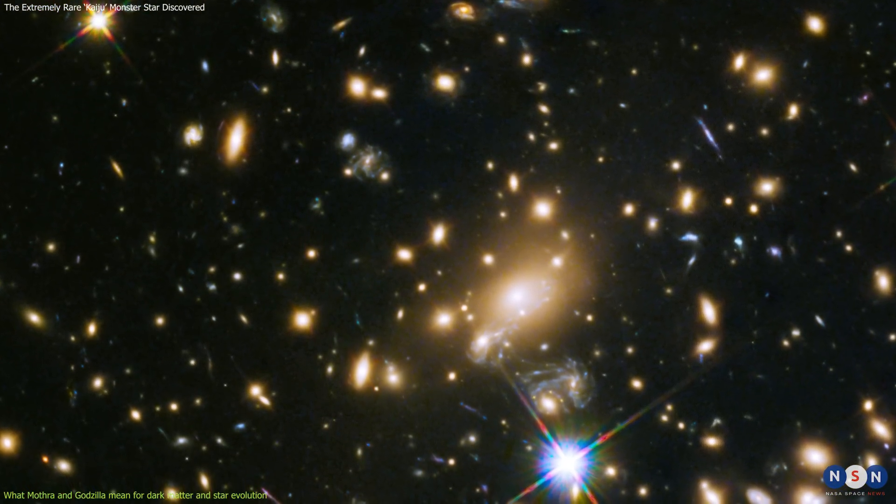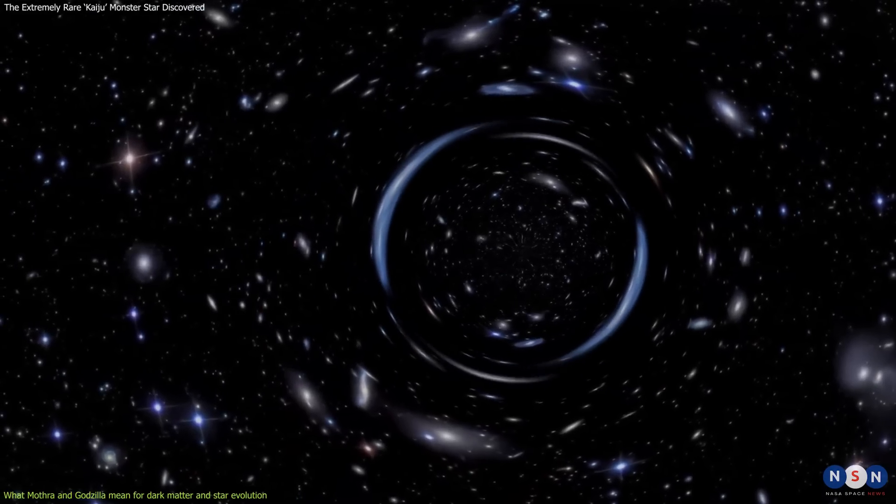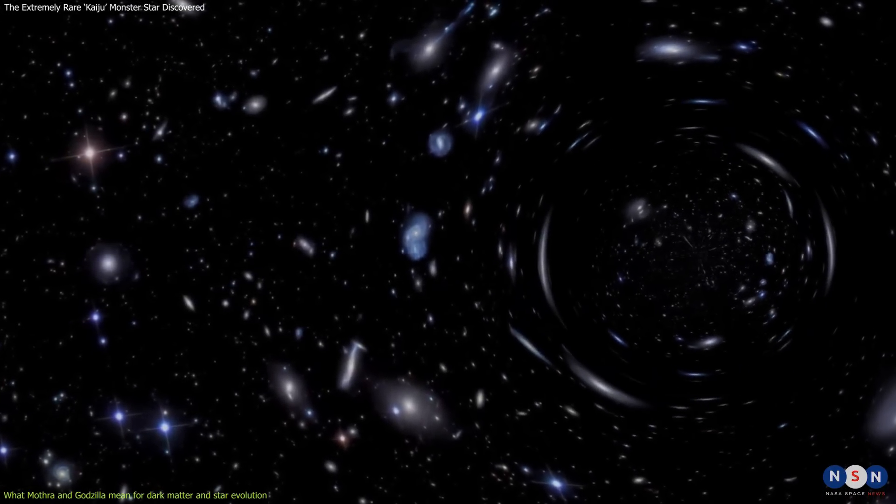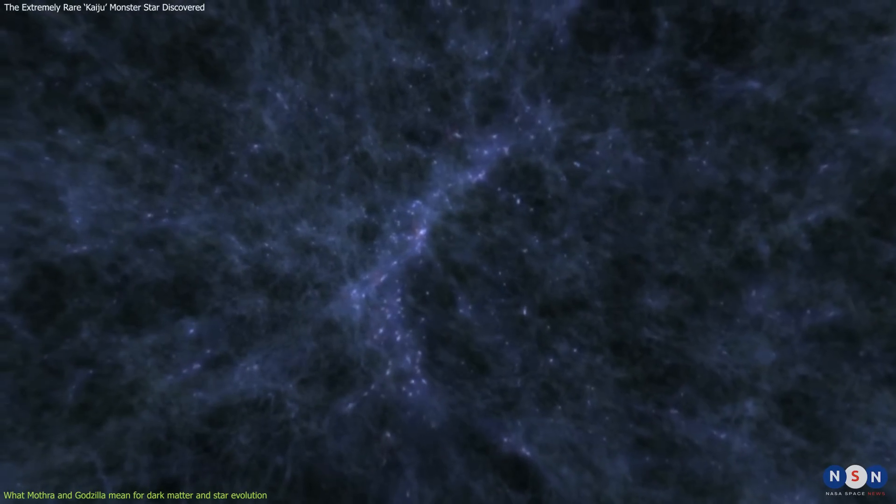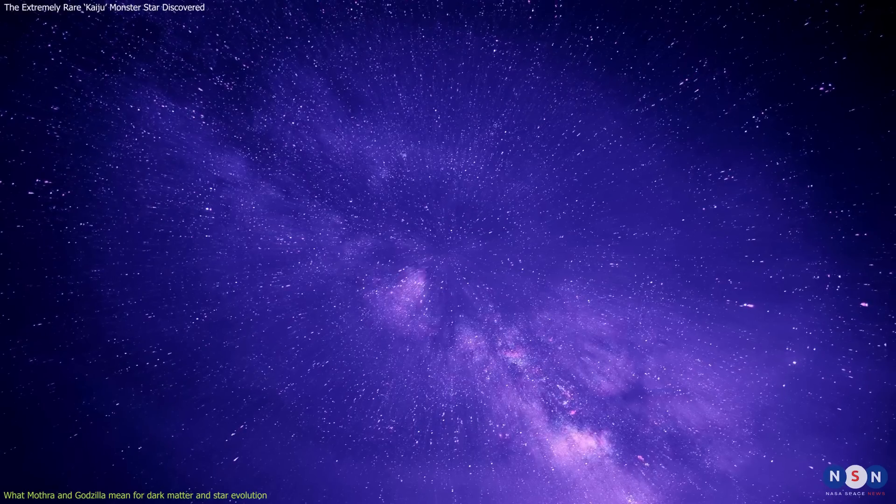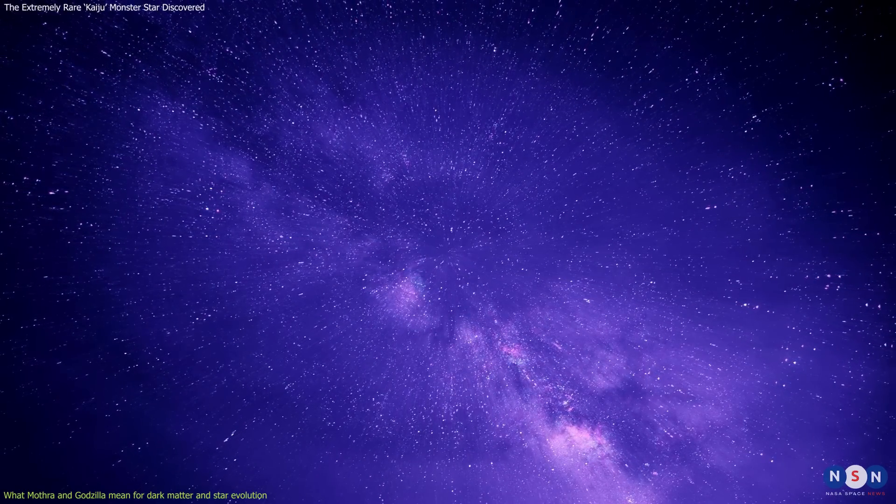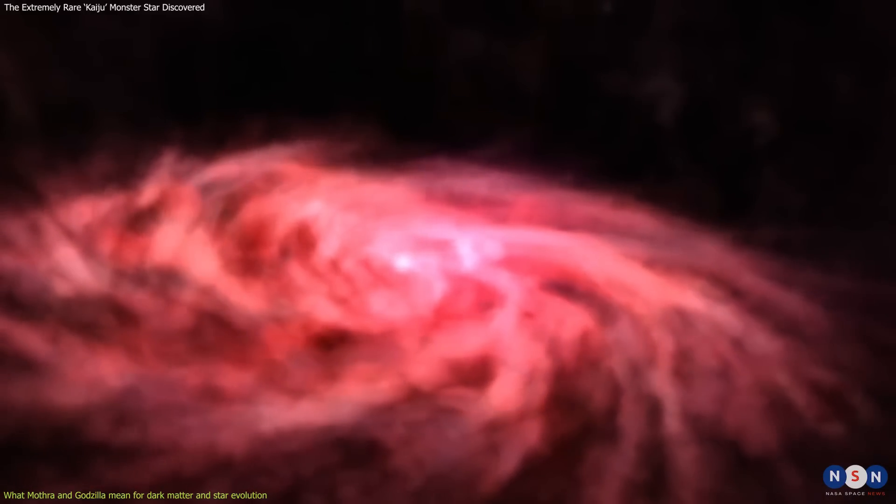For example, they can measure how much dark matter there is in the galaxy clusters that act as lenses, how clumpy or smooth it is, and how it interacts with normal matter and itself. They can also look for any signs of dark matter annihilation or decay, which could produce gamma rays or other particles that could be detected by other telescopes.